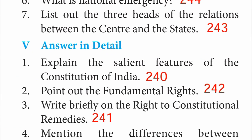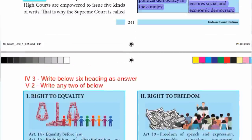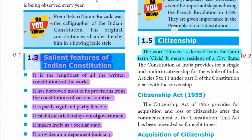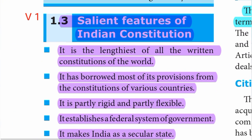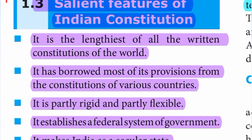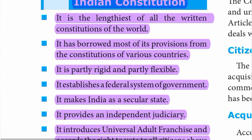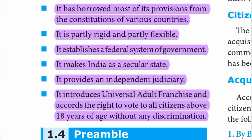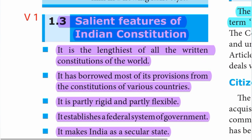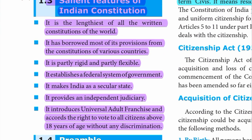Roman number five — answer in detail. First one: explain the salient features of the Constitution of India. It is the lengthiest of all written constitutions in the world. It has borrowed most of its provisions from the constitutions of various countries. It is partly rigid and partly flexible. It establishes a federal system of government. It makes India a secular state. It provides an independent judiciary. It introduces universal adult franchise, according the right to vote to all citizens above 18 years of age without any discrimination.